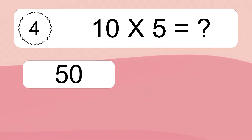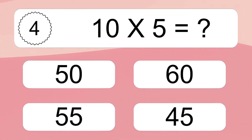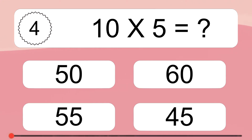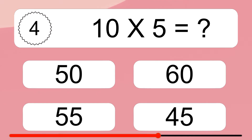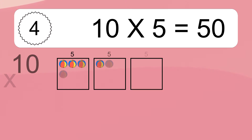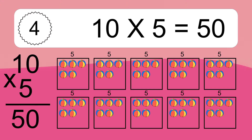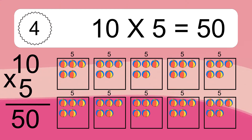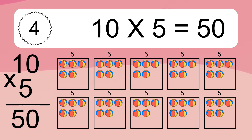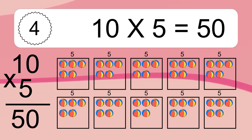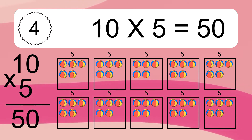10 times 5 equals what? 10 times 5 equals 50. We have 10 boxes, and each box has 5 colorful balls inside. If you count all the balls in all the boxes together, you will have 10 times 5 balls. This equals 50 balls.